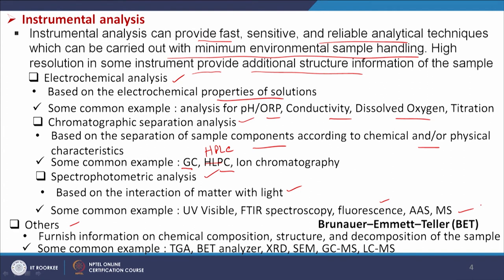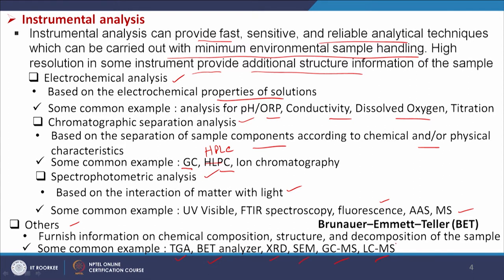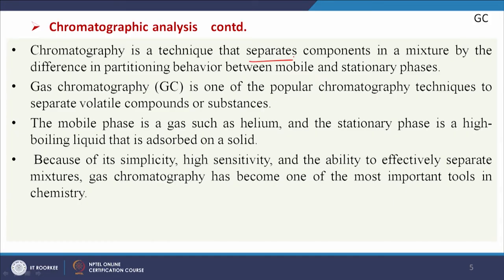Other methods used for analysis of environmental parameters include TGA, BET analyzer, XRD, ACM, GCMS, and LCMS. We will be making some discussion on these instrumental methods. The first is chromatography — both gas chromatography and liquid chromatography. Chromatography is a technique that separates components in a mixture by the difference in partitioning behavior between the mobile and stationary phase.